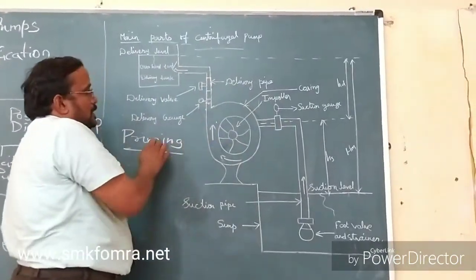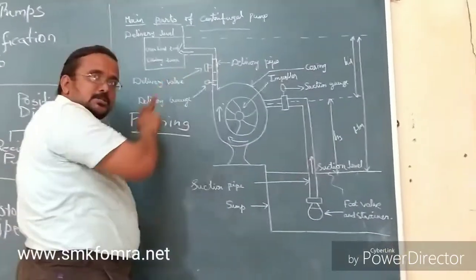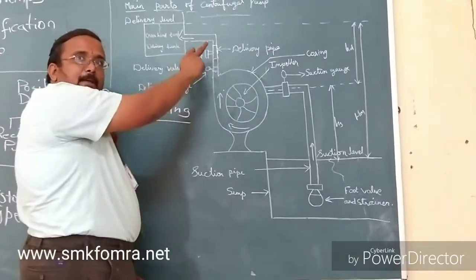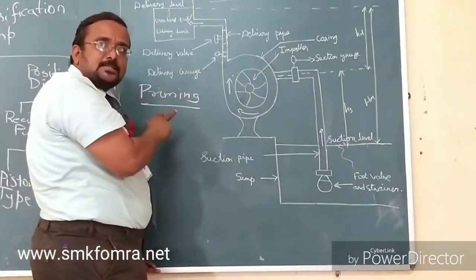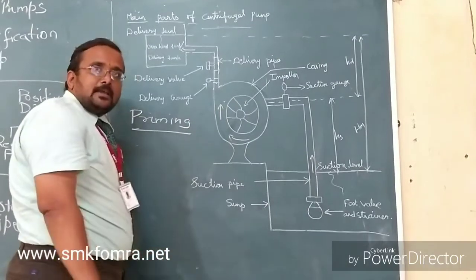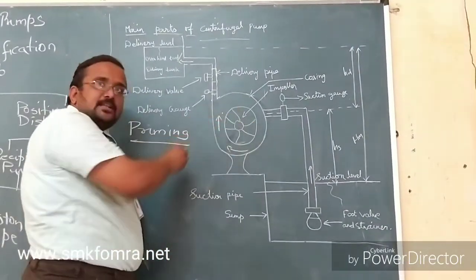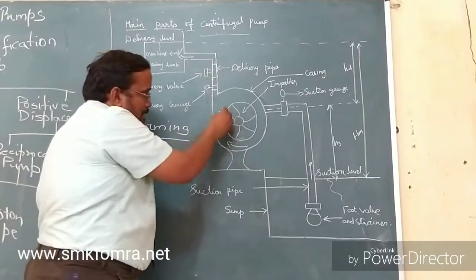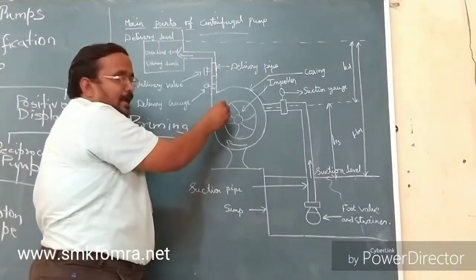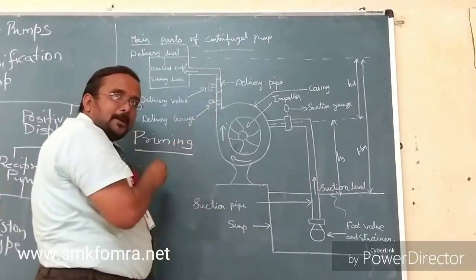Let us see the working. Point number one, delivery pipe is closed. When the delivery pipe is closed, what happens? There is a vacuum created here. Electric motor is started, the impeller runs. When the impeller runs, the vacuum is created. Now the delivery valve is opened.